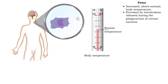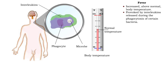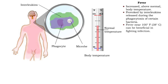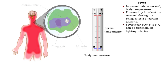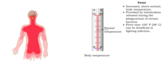When certain bacteria are phagocytized, the release of interleukins triggers the readjustment of the body's thermostat. Excessive fever, above 112 degrees Fahrenheit or 44 degrees Celsius, can be dangerous, even fatal. But temperatures around 100 degrees Fahrenheit, or 38 degrees Celsius, can be beneficial in fighting viral or bacterial infections.